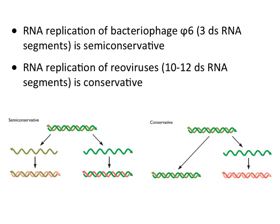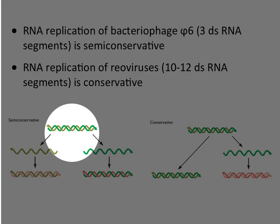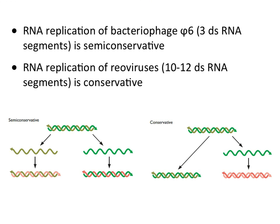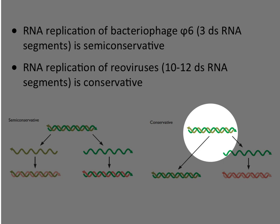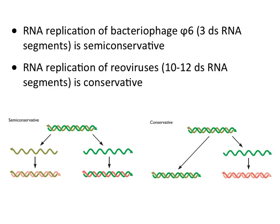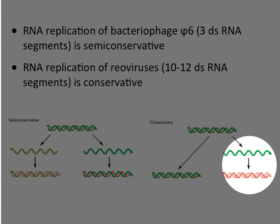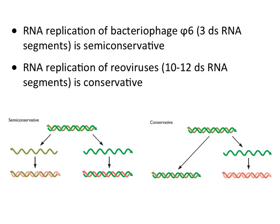Because this is double-stranded, you may ask: is this conservative or semi-conservative replication? When we replicate our DNA genomes, we do it in a semi-conservative fashion — the two strands separate and each one is duplicated. Some double-stranded RNA viruses do this, but real viruses like reoviruses actually do conservative replication. They take the genome, make an mRNA from one strand, and then make that mRNA double-stranded. So actually only one strand is being copied — that's why it's called conservative replication.